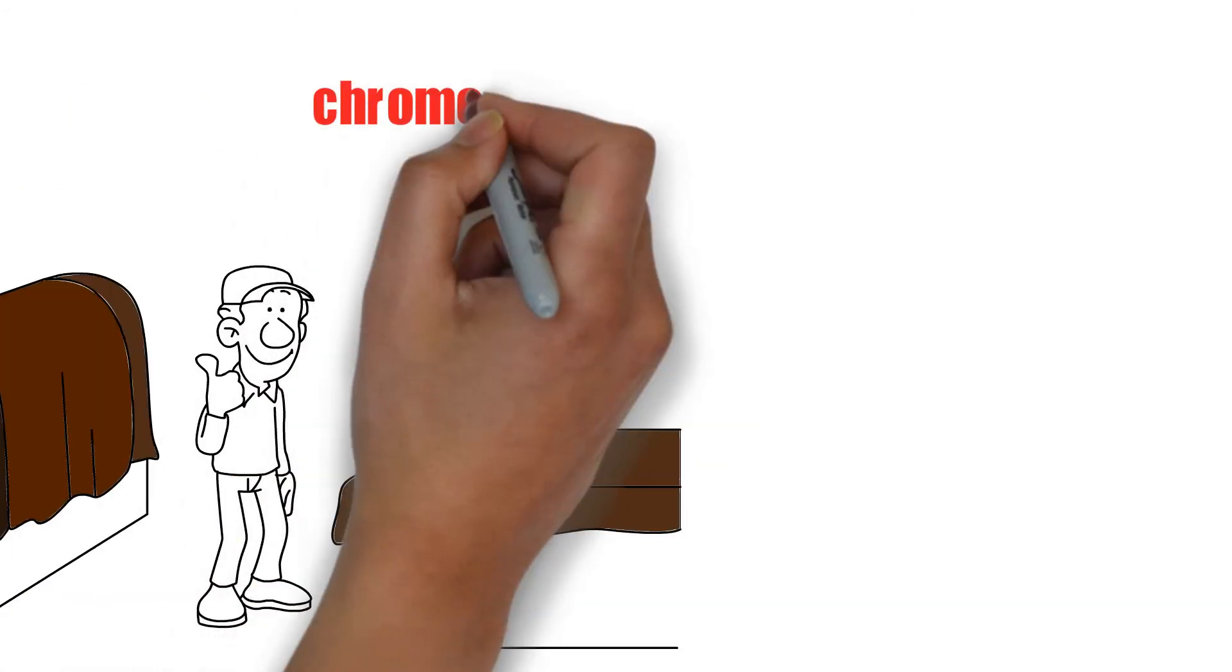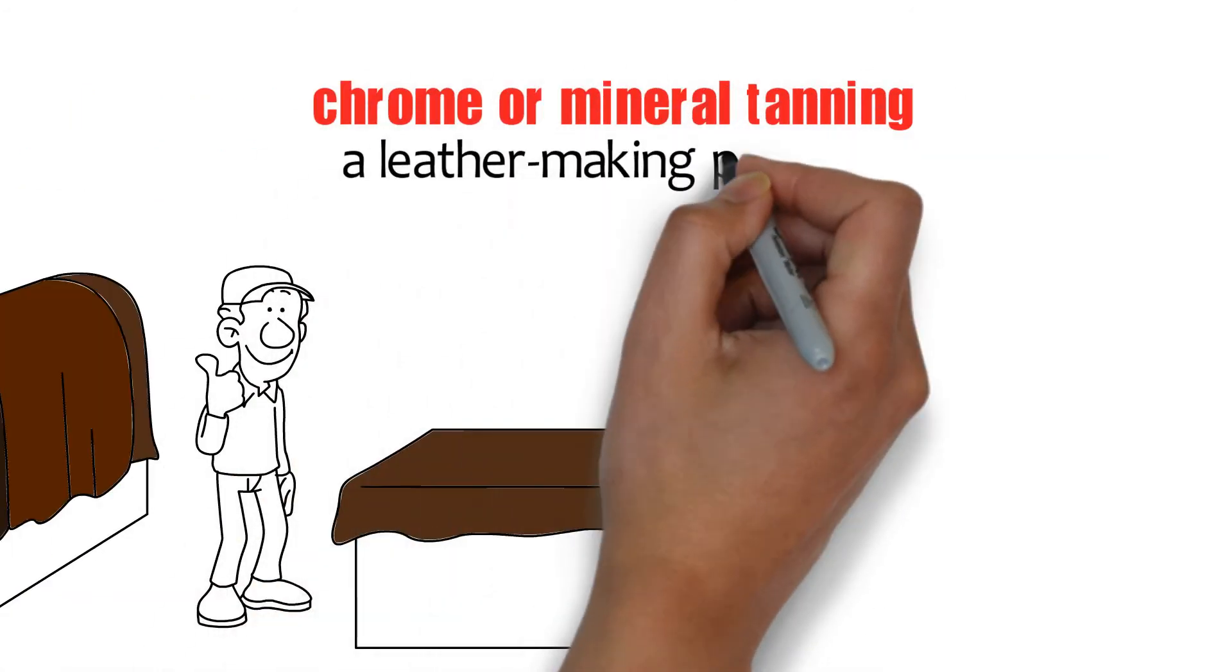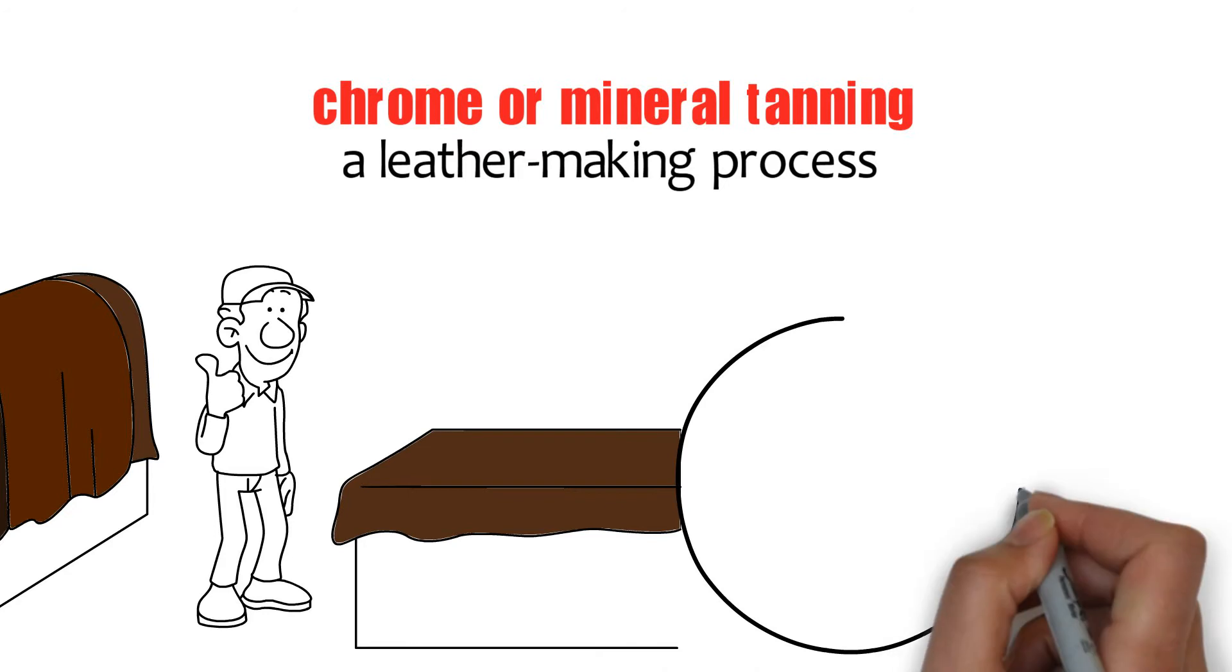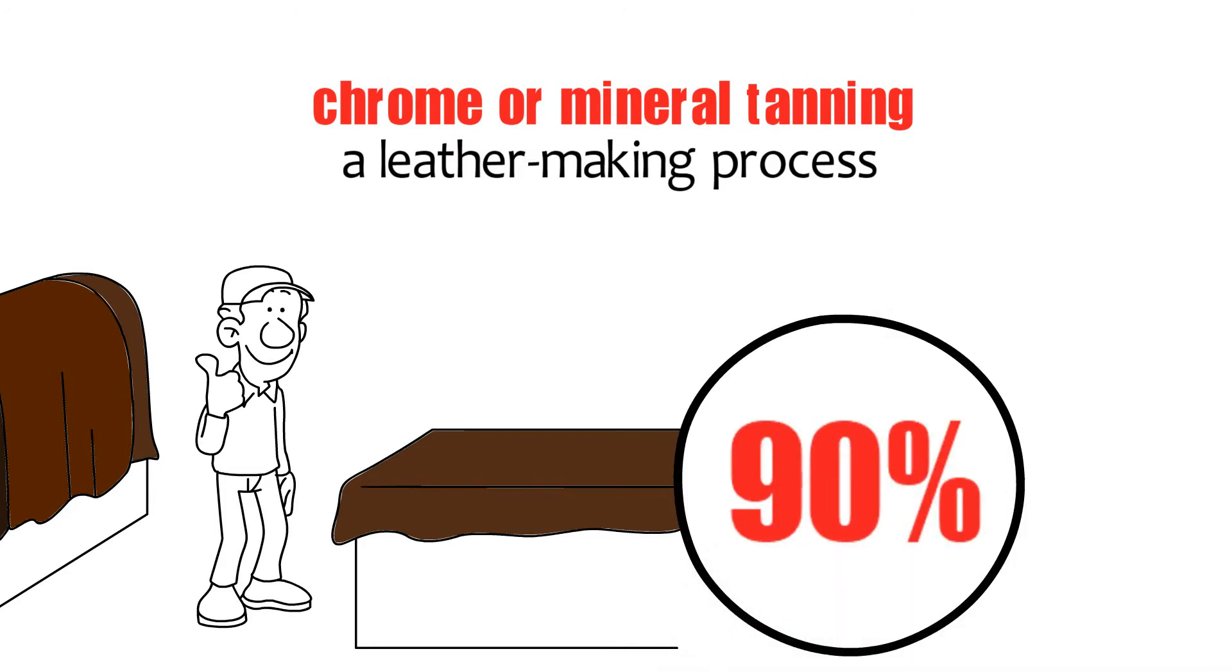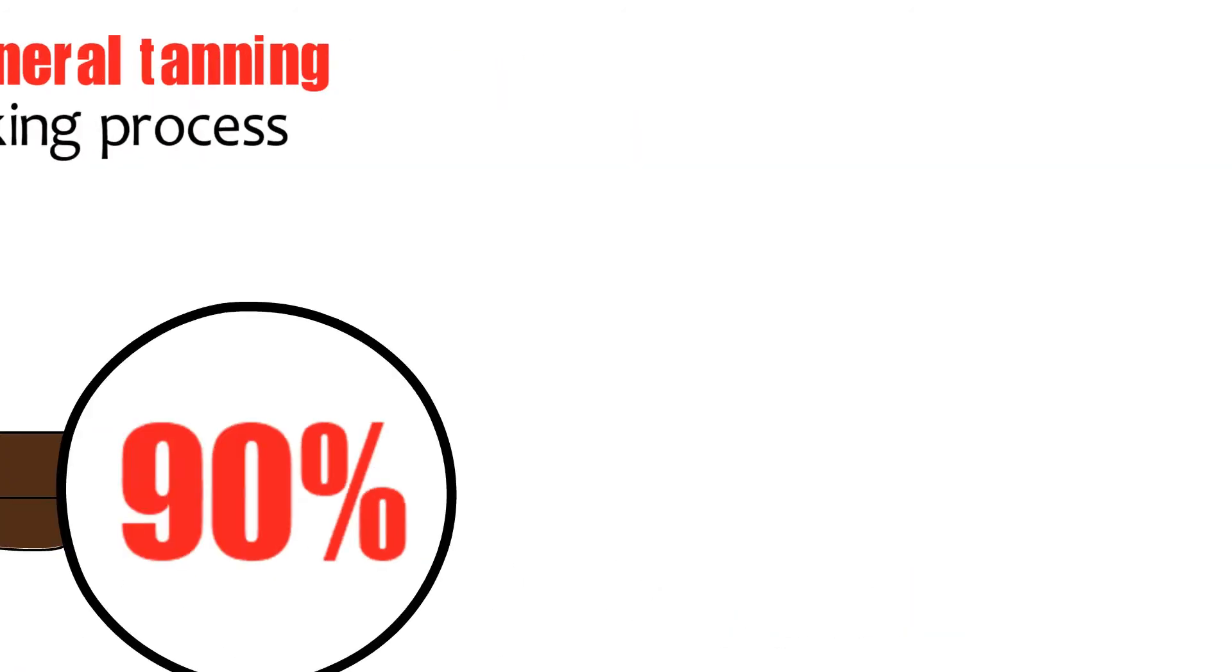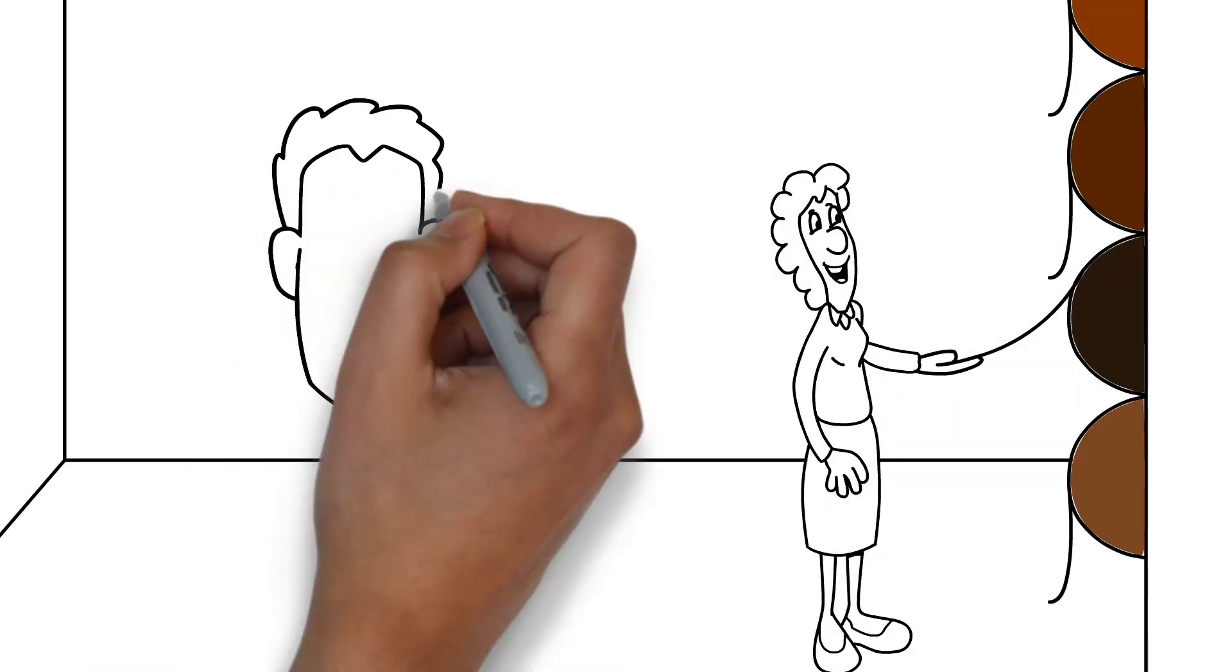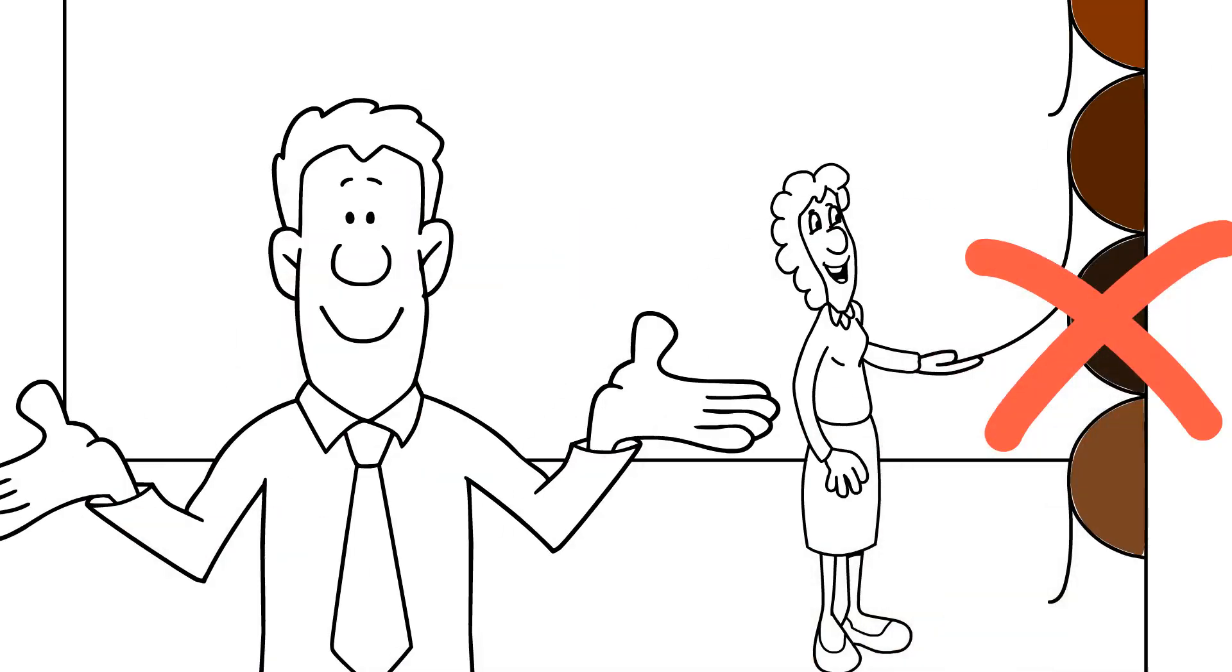But recently, chrome or mineral tanning, a leather-making process that uses synthetic tannins, accounts for 90% of all leather processing methods. Consumers may believe that this softer leather is of higher quality, but it will not last as long.